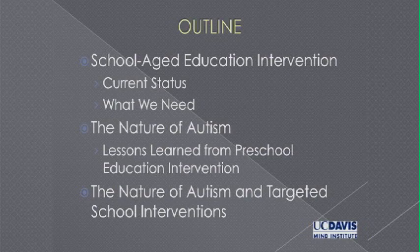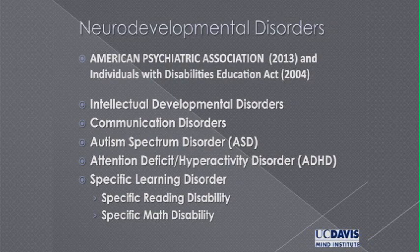In order to understand educational intervention, you really need to know the nature of the problems that are inhibiting learning in the child. We've learned a lot about the nature of the problems that inhibit learning in autism from the study of younger children. There are lots of children being served in schools, all under the rubric of exceptionalities or neurodevelopmental disorders, and there's a variety of different types of problems that affect learning in children. Autism is one of those.